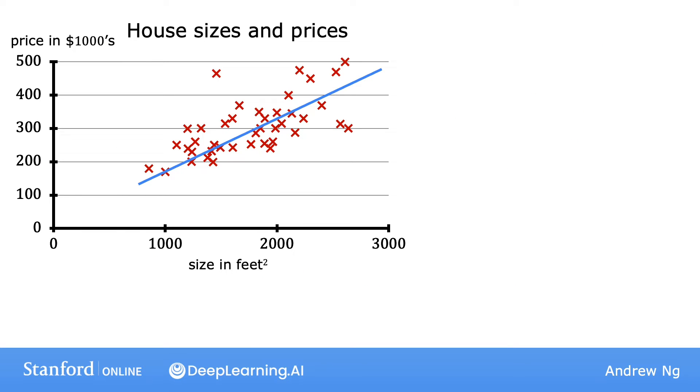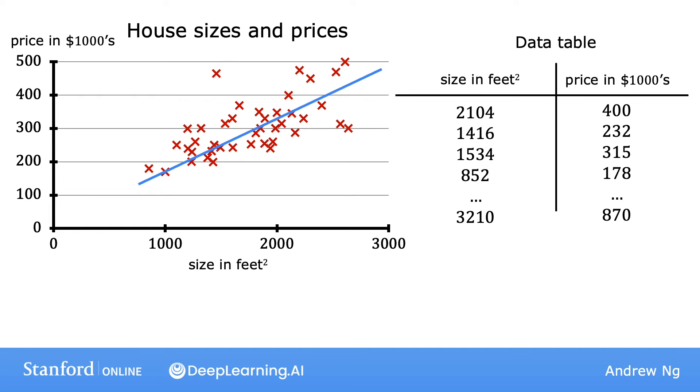In addition to visualizing this data as a plot here on the left, there's one other way of looking at the data that would be useful. And that's a data table here on the right. The data comprises a set of inputs. This would be the size of the house, which is this column here. It also has outputs. You're trying to predict the price, which is this column here.